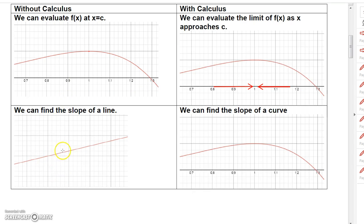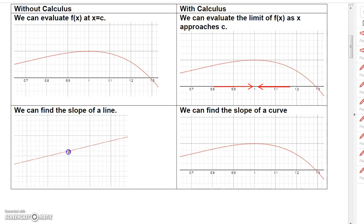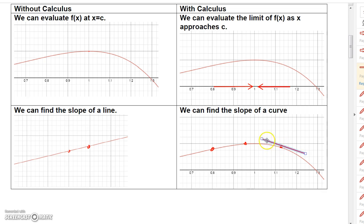Without calculus, with algebra, if we had a line we could find its slope by identifying two points. With calculus we can find the slope of a curve at any point. The slope at this point would be one value, the slope here would be a different value, and here yet another value. The slope of that curve at any point is actually the slope of the tangent line to the graph at that particular point.